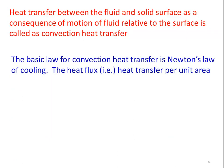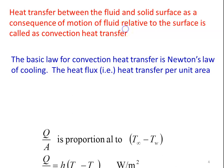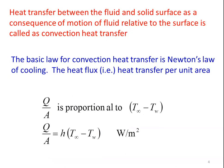The basic law for convection heat transfer is Newton's law of cooling. The heat flux — heat transfer per unit area — Q/A is proportional to the temperature difference: Q/A = H × (T∞ - T_w), where H is the parameter called the heat transfer coefficient. In all convection heat transfer calculations, we must calculate the heat transfer coefficient. Once H is known, we can calculate the amount of heat transfer from this equation.